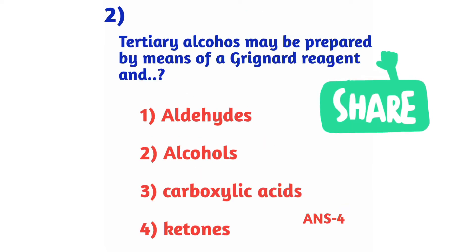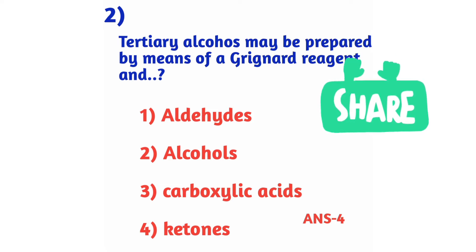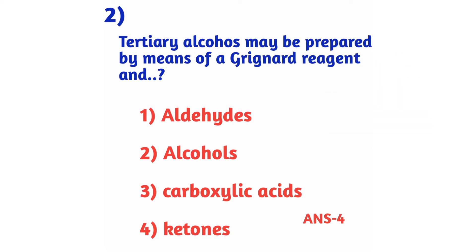Question number 2: Tertiary alcohols may be prepared by means of a Grignard reagent and — option 1: aldehydes, option 2: alcohols, option 3: carboxylic acids, option 4: ketones. The right answer is option 4, ketones.